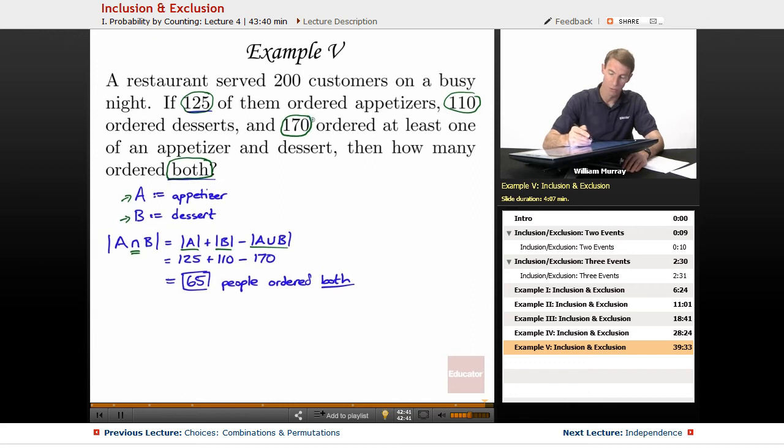So, that's the union right there is the 170. And then we just run the arithmetic here. And we end up with 65 people ordering both appetizers and desserts. 65 people in the intersection there.